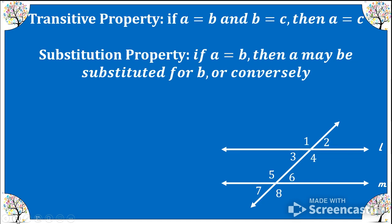The transitive property simply says if A equals B and B equals C, then A must equal C. That's the transitive property and it's going to come in handy a lot. The substitution property says if A equals B, then A may be substituted for B, or conversely.